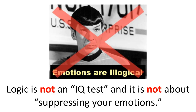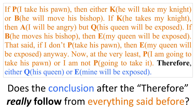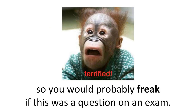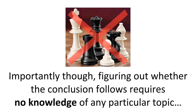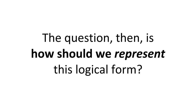Logic is not an IQ test, and it is not about suppressing your emotions. Rather, logic is a human tool, letting us extend the limited reach of our thinking. Does the conclusion after the 'therefore' really follow from everything said before? If you're an ordinary human like me, you're probably unsure — you would probably freak if this was a question on an exam. Importantly, figuring out whether the conclusion follows requires no knowledge of any particular topic, because reasoning can be about different topics while having the same exact form. The question, then, is how should we represent this logical form?